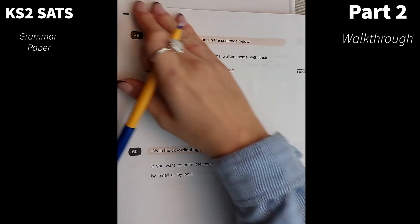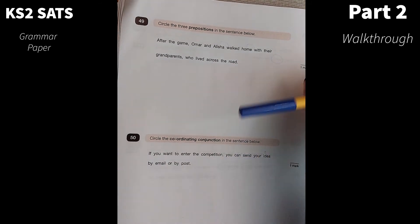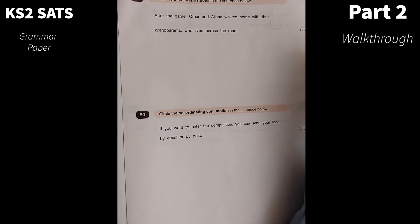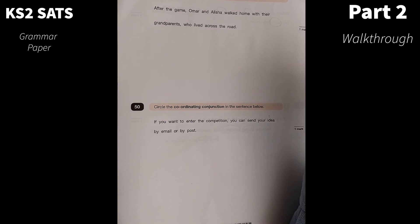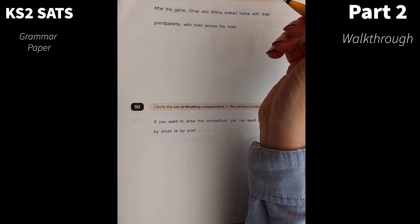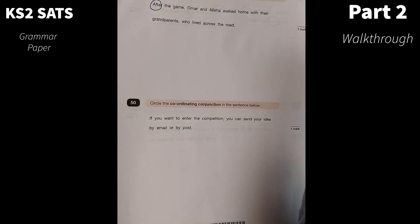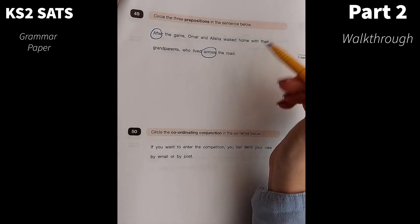Number 49. Circle three prepositions in the sentence below. Prepositions show the position of something. They show where something is. After the game, Omar and Alicia walked home with their grandparents who lived across the road. So we have after, we have across, and we have with.